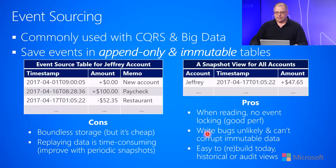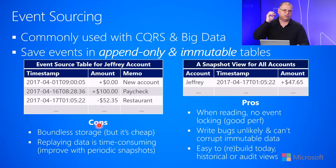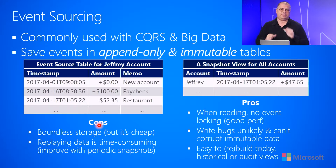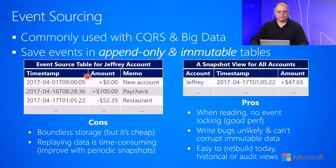Another nice thing is that write bugs are unlikely and can't corrupt the immutable data. As the events are coming into your service, you're basically taking them and storing them in the table — you're not doing processing on them. Therefore, the code you write is usually really simple: take the event, store it in the table. It's very unlikely to have any bugs in that code. The bugs, if any, are in the code that scans the table to do processing and produce the views.